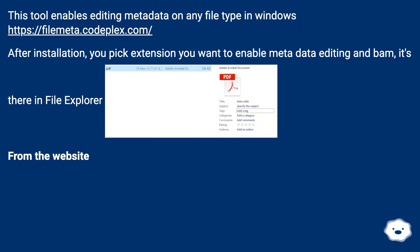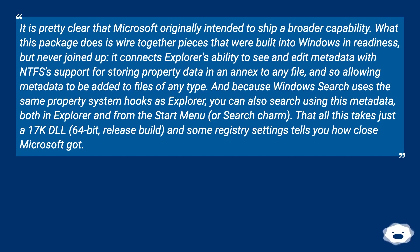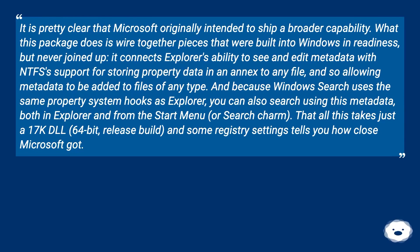This tool enables editing metadata on any file type in Windows — see this URL. After installation, you pick the extension you want to enable metadata editing for, and it's there in File Explorer. It is pretty clear that Microsoft originally intended to ship a broader capability. What this package does is wire together pieces built into Windows in readiness but never joined up. It connects Explorer's ability to see and edit metadata with NTFS's support for storing property data in an alternate data stream for any file, allowing metadata to be added to files of any type. Because Windows Search uses the same property system hooks as Explorer, you can also search using this metadata, both in Explorer and from the Start menu. All this takes just a 17KB DLL (64-bit release build) and some registry settings, which tells you how close Microsoft got.